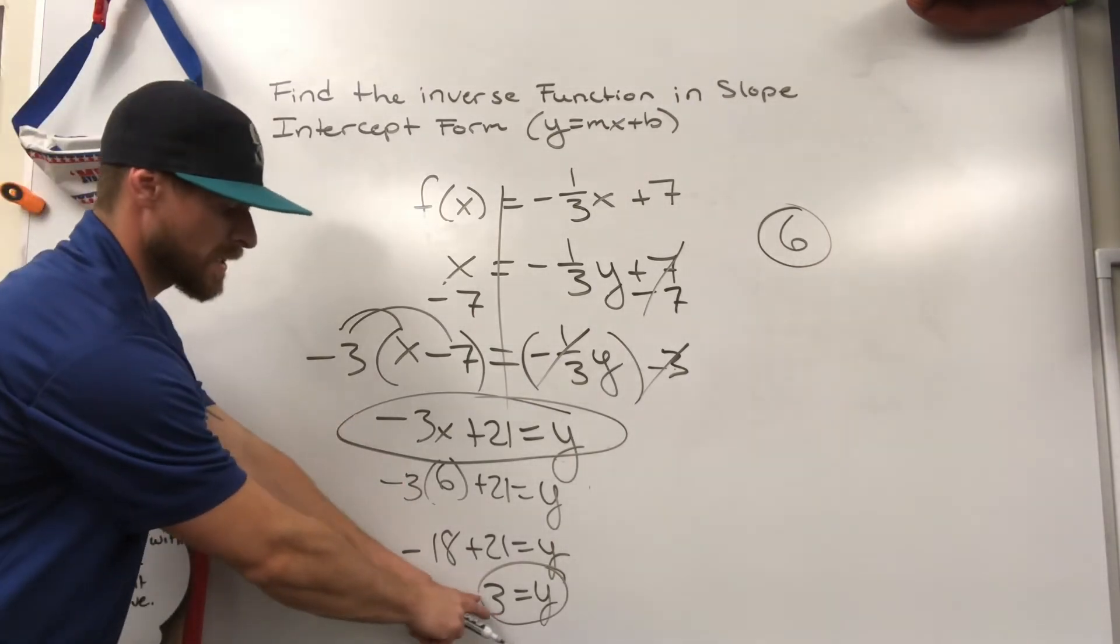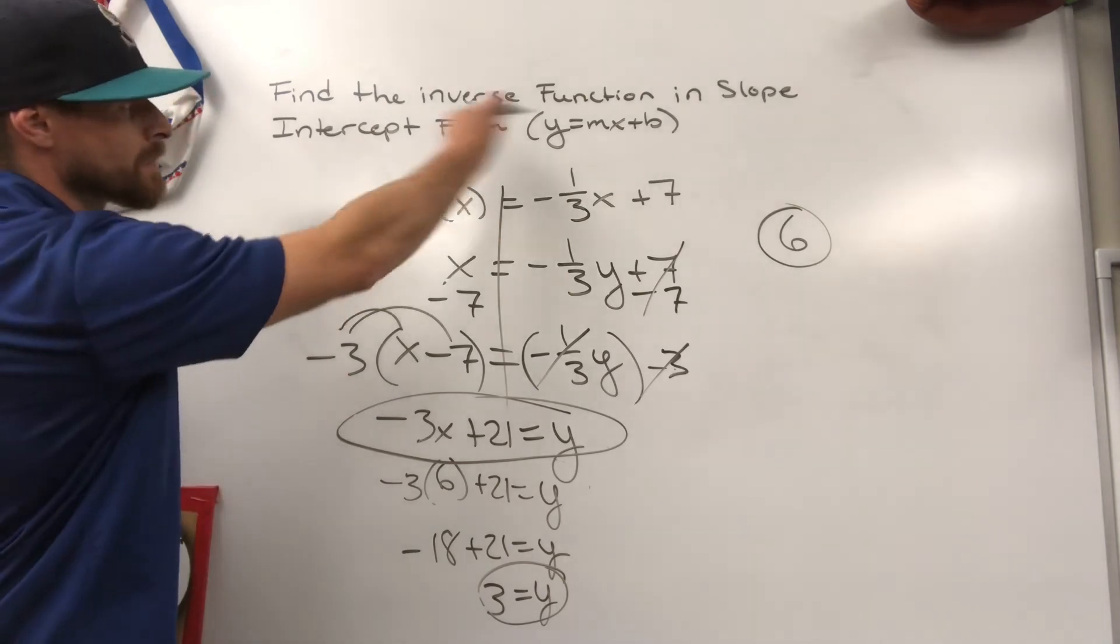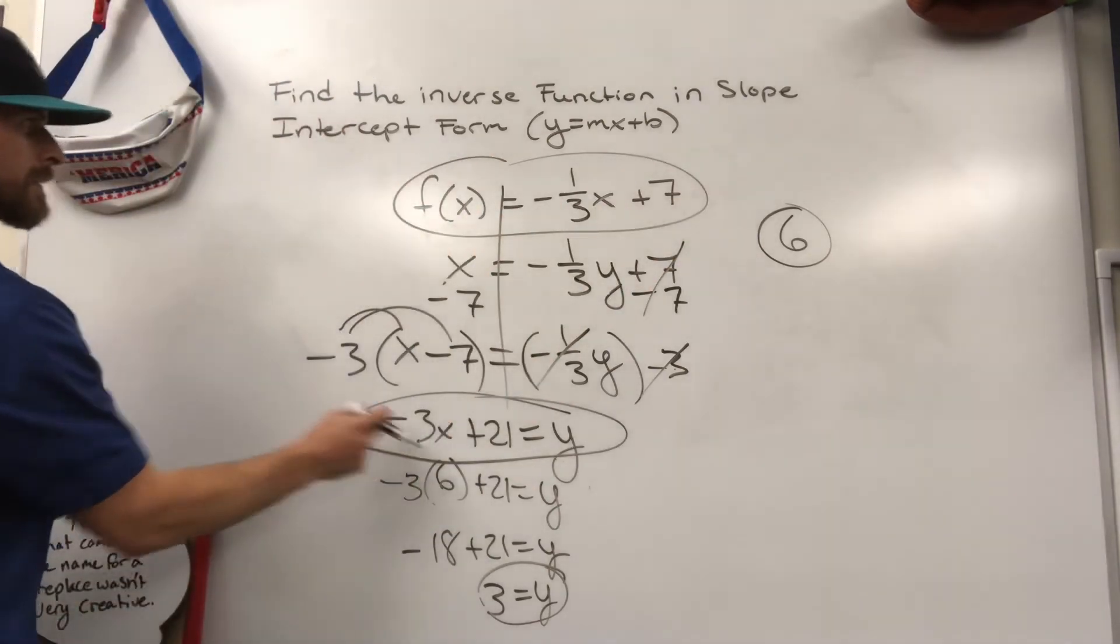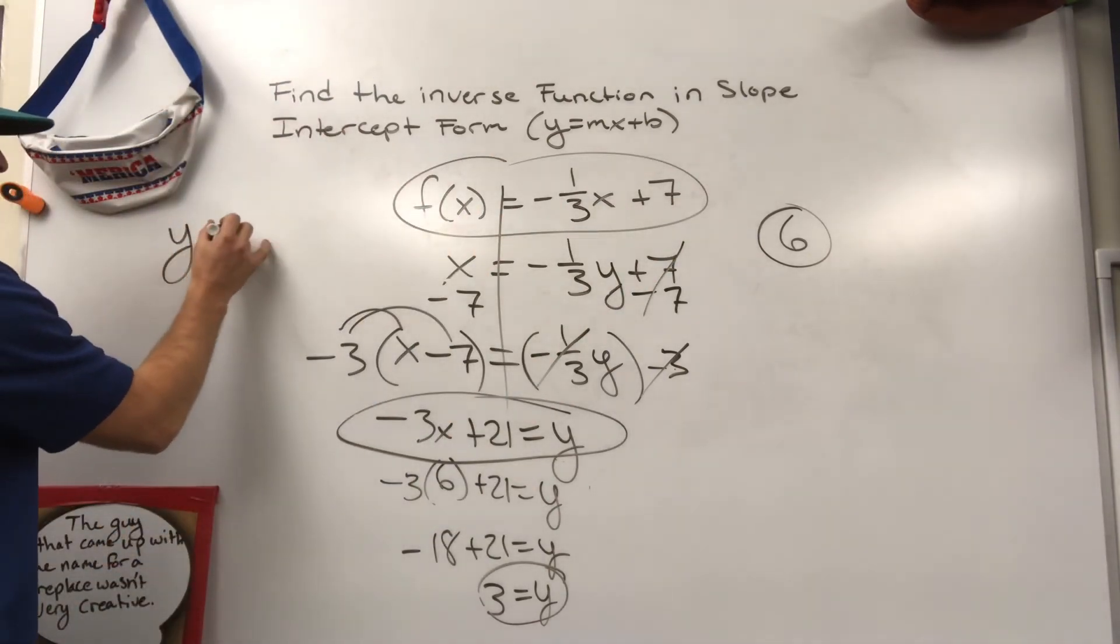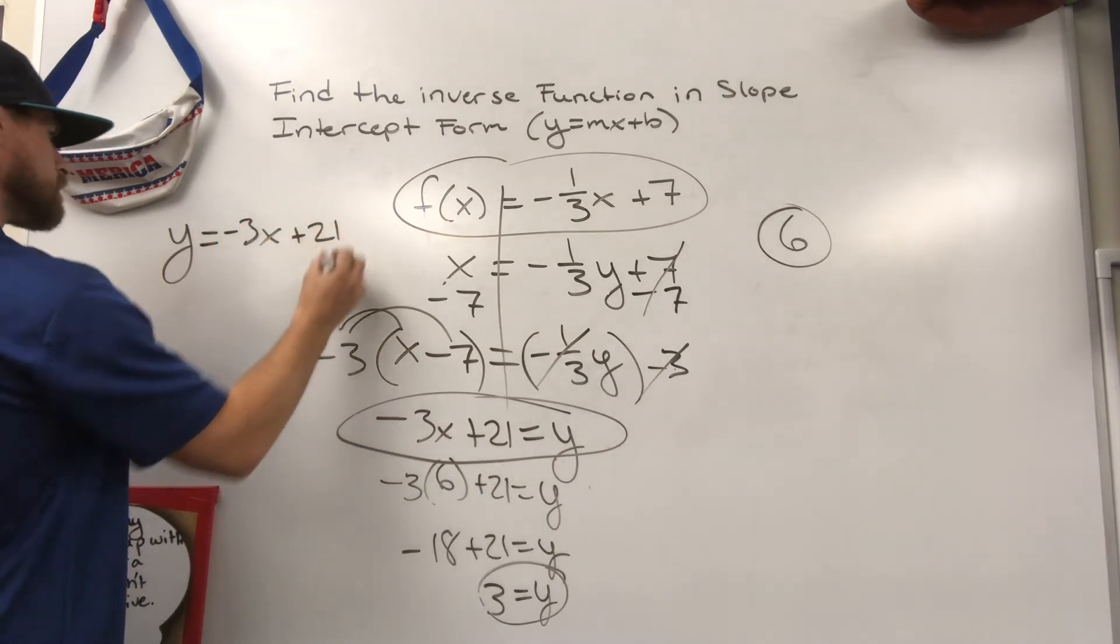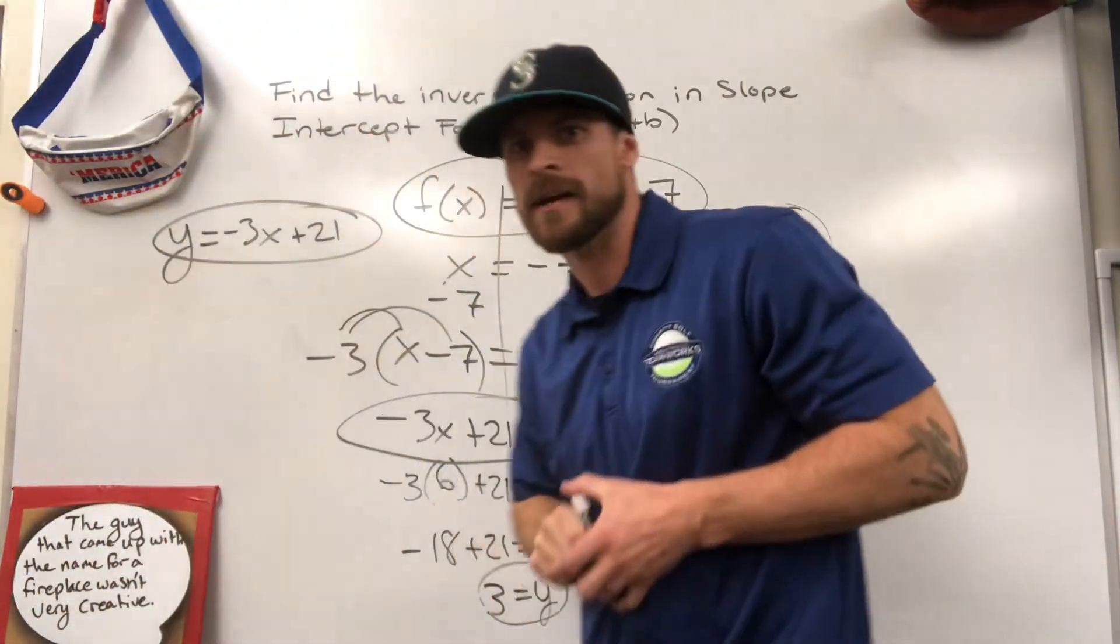This here is your inverse. This was me checking to make sure that it worked. So if you're going to give the answer, find the inverse function in slope intercept form of this, your answer would be y equals negative 3x plus 21. Study hard and good luck on your upcoming test.